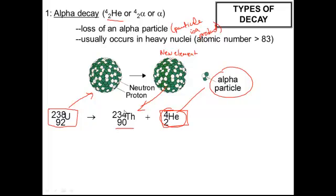You have a 4, and you have a 238, so you know you need 234. It has to add up to be 92. You already have 2, so you know this is 90, and you go to the periodic table, and you look up number 90, and find out that it's thorium.